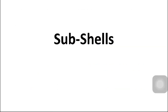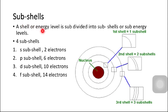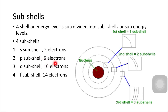Next are the sub-shells. A shell or energy level is subdivided into sub-shells or sub-energy levels. We have four types of sub-shells: S, P, D, and F. Like shells, sub-shells also have a maximum electron limit. The S sub-shell can accommodate 2 electrons, P can accommodate 6, D can accommodate 10, and F can accommodate 14 electrons.